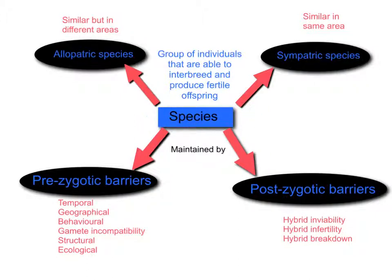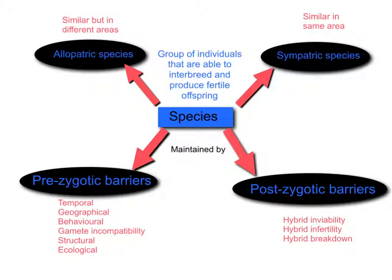A species can be defined as a group of individuals that can interbreed producing fertile offspring. The first important thing is that they are able to interbreed — we'll look at why that becomes important in defining species as separate from each other — and the fertile offspring is also an important factor.